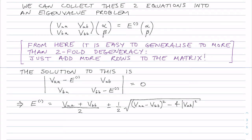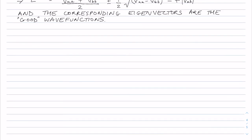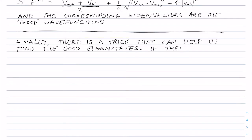And the corresponding eigenvectors are going to be the good wave functions. Finally I want to talk about a trick that can help us to find the good eigenstates. So this trick has use particularly if there are symmetries of a problem that we can exploit.